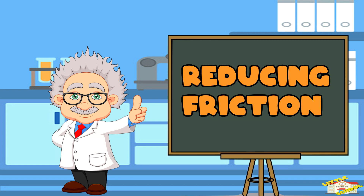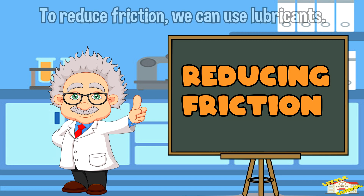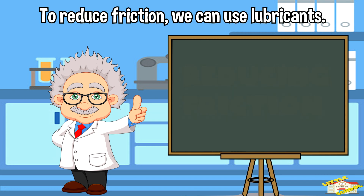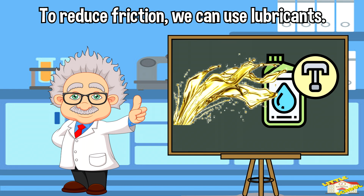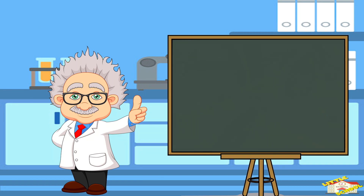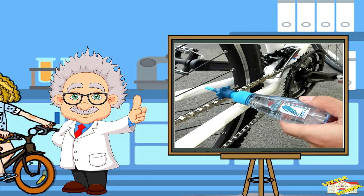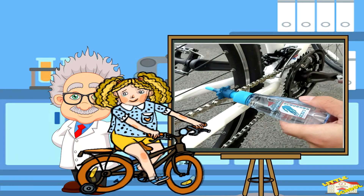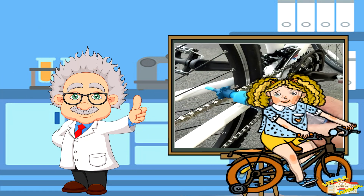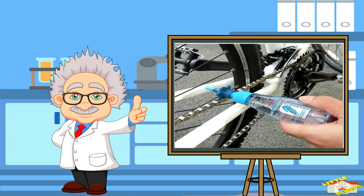To reduce friction, we can use lubricants like oil or grease to make surfaces slide more easily. Think about how a well-oiled bicycle chain helps your bike ride smoothly.